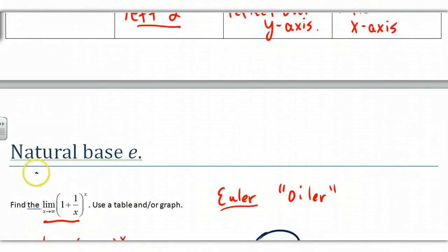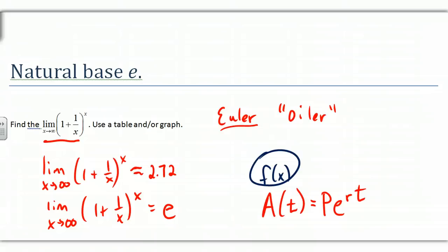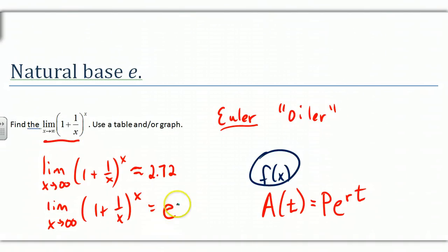It's not a 'natural number' — it's a natural base, and we call it e. This quantity approximately equals e, and in fact if we take the limit it does equal e. As x gets bigger and bigger we get 2.72..., and since it is an irrational number, Euler called it e — probably after his name.